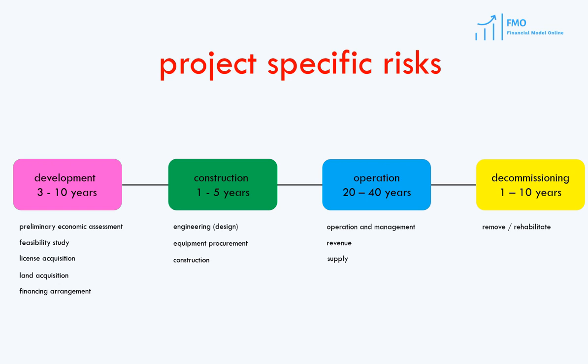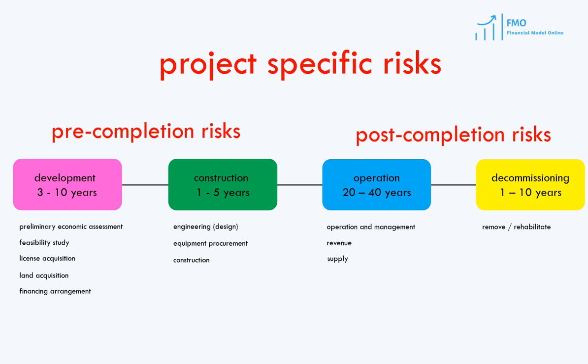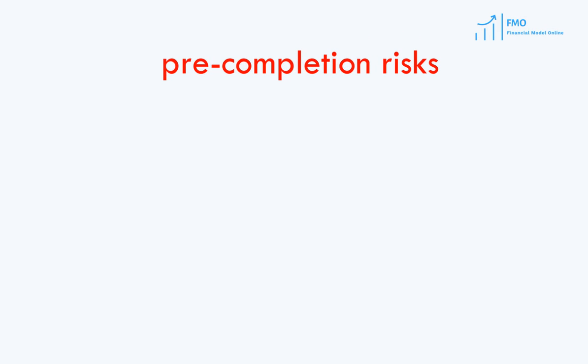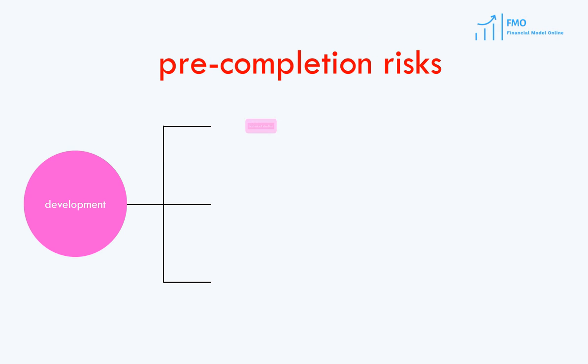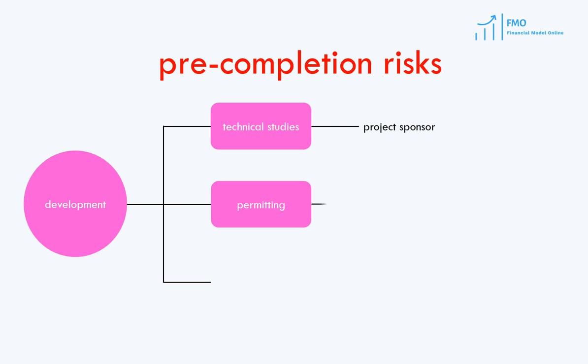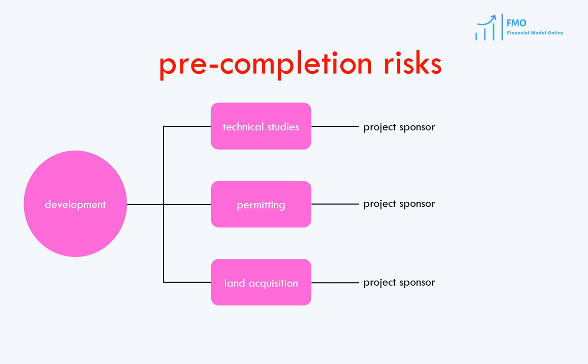Based on the project lifecycle, project-specific risks can be divided into pre-completion and post-completion risks. At the development stage, sponsors have to carry out numerous tasks to understand whether the project makes sense, obtain necessary permits from the government, and acquire the land. These tasks are costly, as multiple consultants will be employed, and at this stage the sponsors do not yet know if the project will be able to raise necessary financing. The risk is entirely on project sponsors, and it is their industry expertise and project finance transaction experience which can really mitigate the risks at development stage.